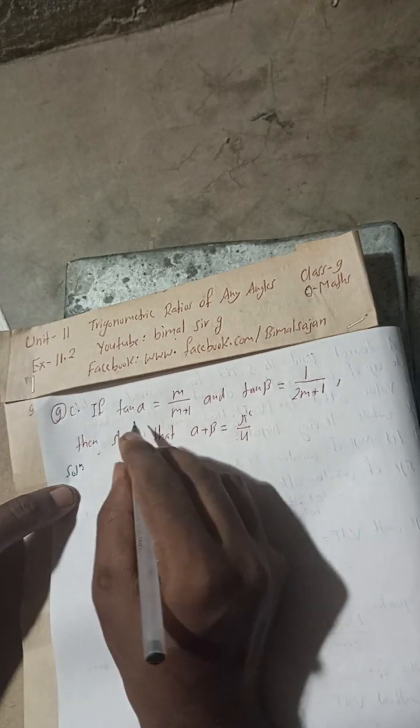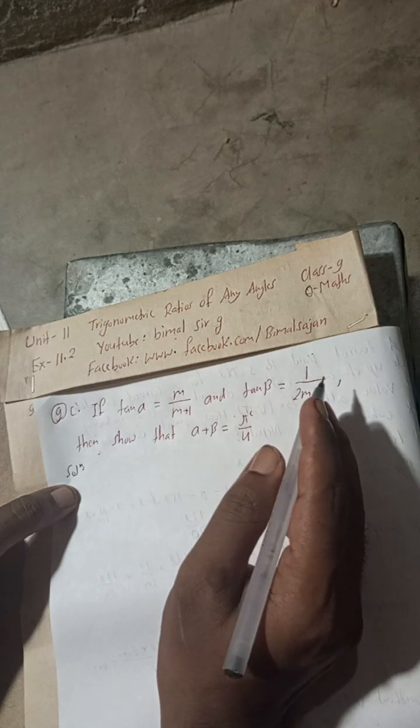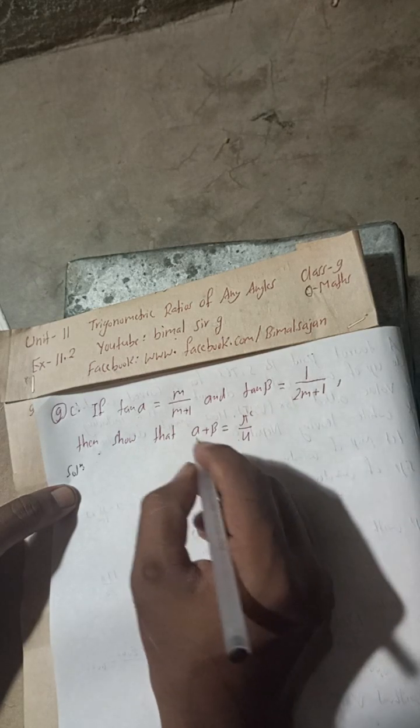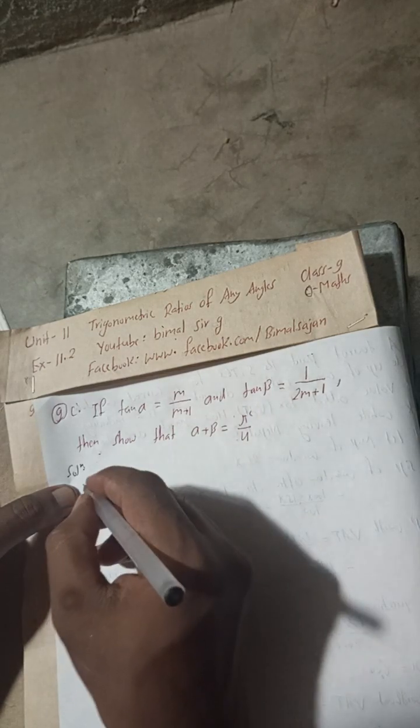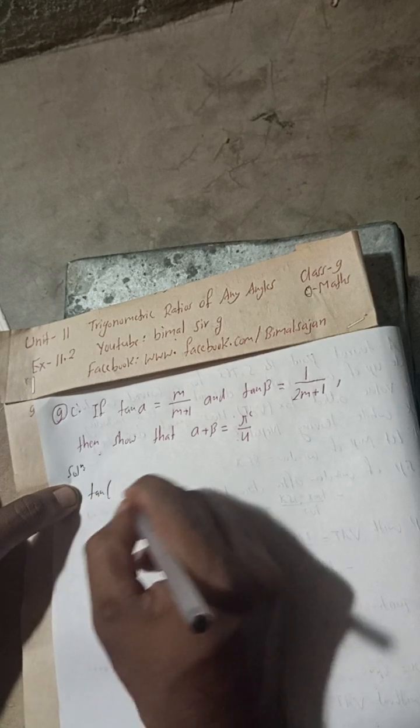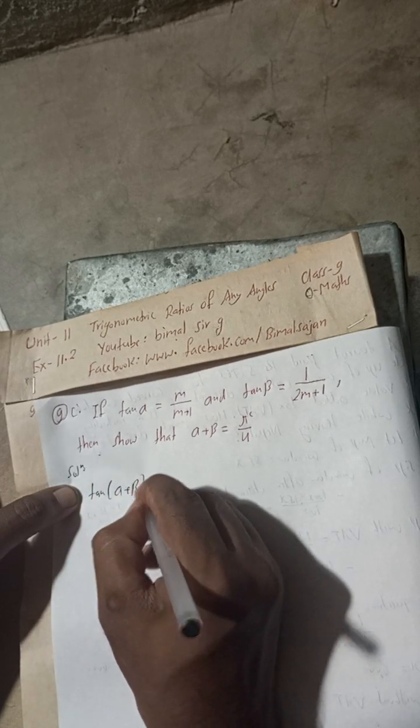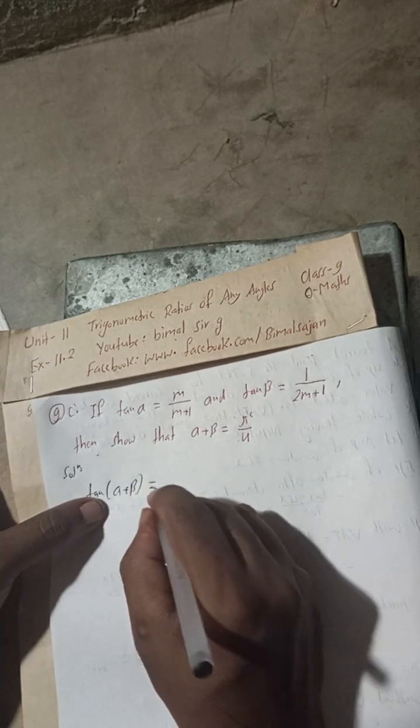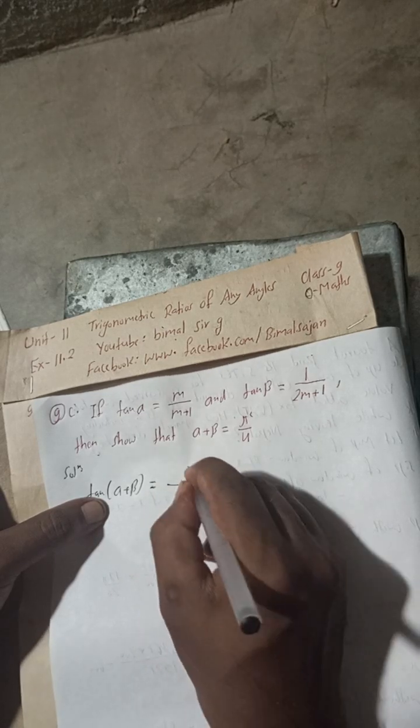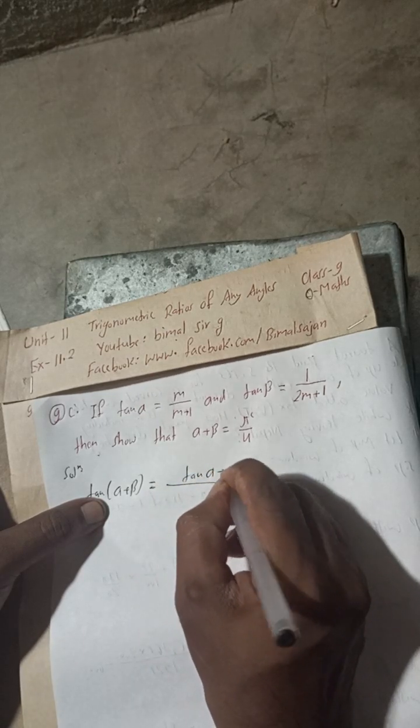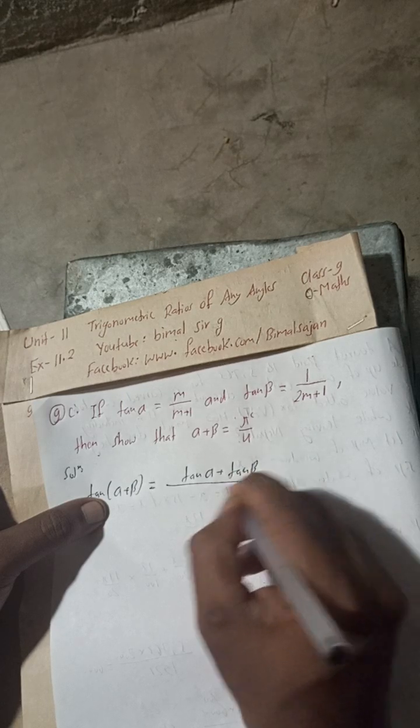The tan(α + β) formula is: tan α + tan β divided by 1 - tan α × tan β.